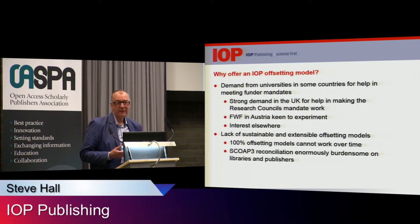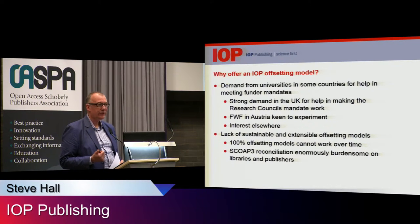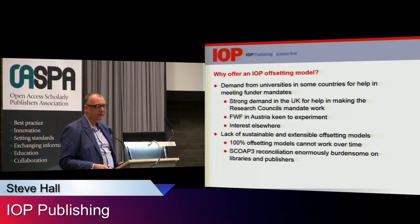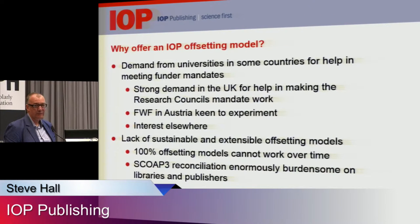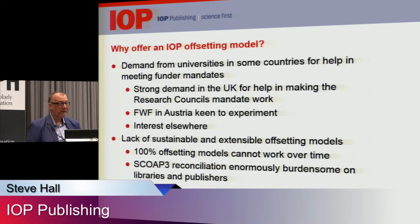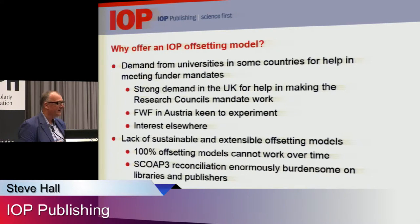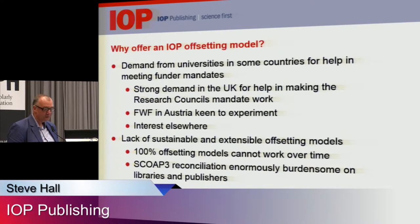The reasons for offering an offsetting model — we started at the beginning of 2014 — were really twofold. The first was political: we wanted to show that publishers could work with libraries as they attempt to make some sort of transition to open access. We had very strong demand in the UK, we were talking to the FWF in Austria, and we're currently in discussion with a third country about a possible trial. Secondly, we didn't believe that the offsetting models currently on offer worked. We don't believe 100% offsetting can work, and we did not want to repeat the nightmare of the Scope 3 reconciliation process. It simply isn't scalable, it isn't extensible, and it's too great an administrative burden.